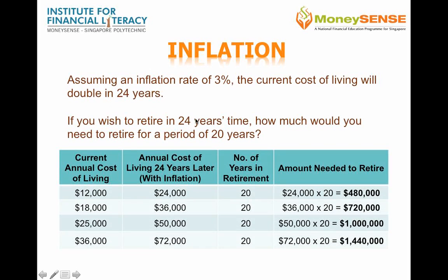Let us consider now a case in which you have an inflation rate of 3% per annum. If the inflation rate was 3% per annum, the cost of living would double in about 24 years' time. So in other words, if you wish to retire in 24 years' time, you will have to take into account this inflation rate. Basically, your money now will be worth less in 24 years' time.